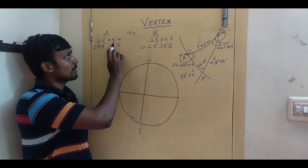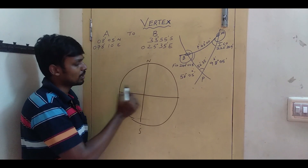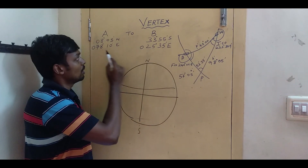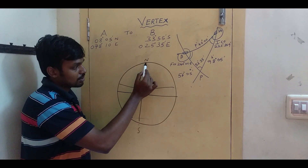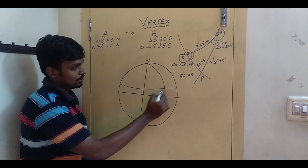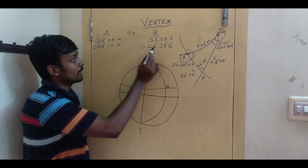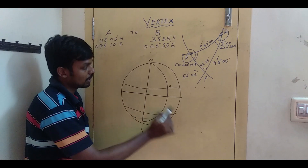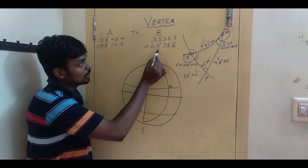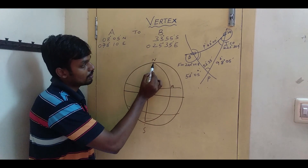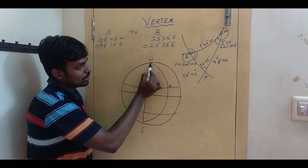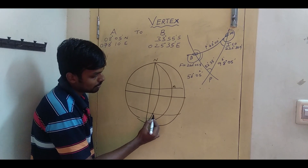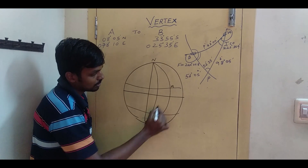The question has point A at 8° 05' North, 78° 10' East, and point B at approximately 33° 55' South, 25° 35' East. Both are on the same side, so when it cuts, this will be my B.